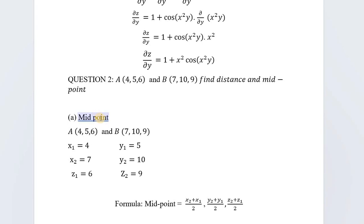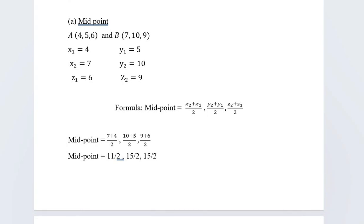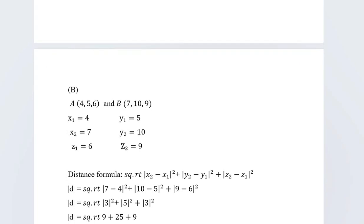In question 2, you have to find the distance and midpoint — it is a very easy question. For the midpoint, the given values are (x₁, y₁, z₁) and (x₂, y₂, z₂). The midpoint formula is: ((x₁+x₂)/2, (y₁+y₂)/2, (z₁+z₂)/2). Just put the values in and you will have the midpoint.